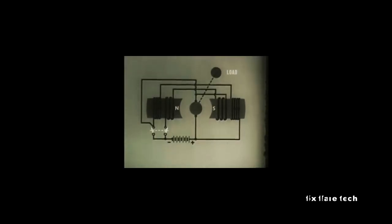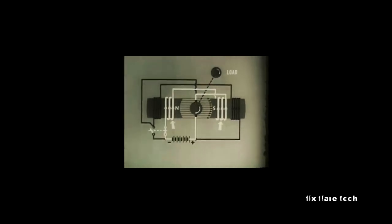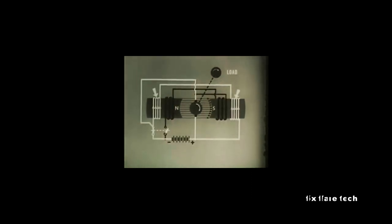The desirable characteristics of both the series and shunt wound motors can be achieved in the compound wound motor. In order to obtain good starting torque, the series field is used. When running speed has been attained, a centrifugal switch cuts out the series field and cuts in the shunt field — it is now a shunt motor and the speed regulation is good. Compounding provides good starting torque and good speed regulation, allowing for efficient operation and minimizing the possibility of damage to the motor.